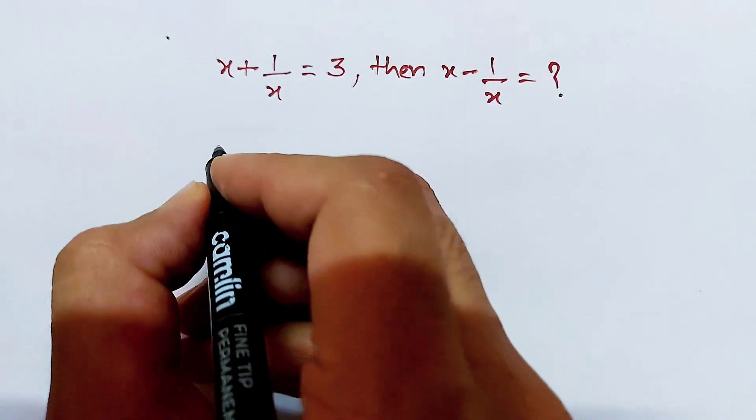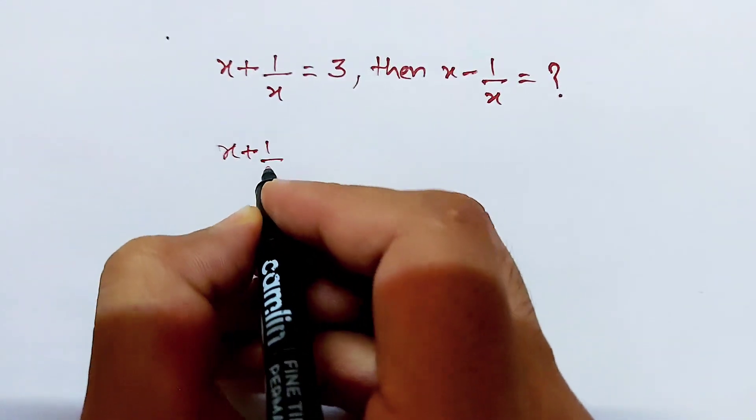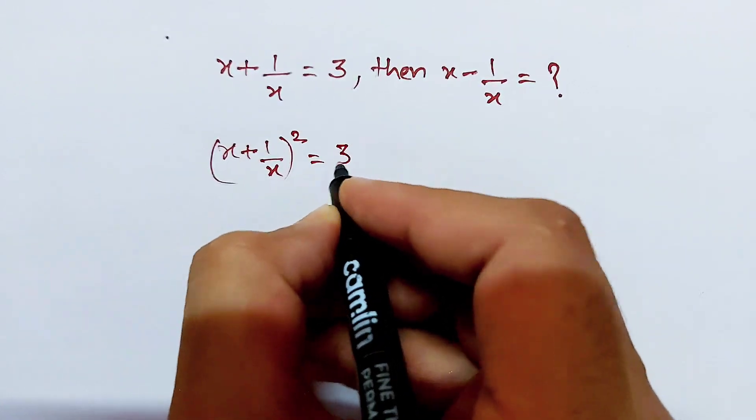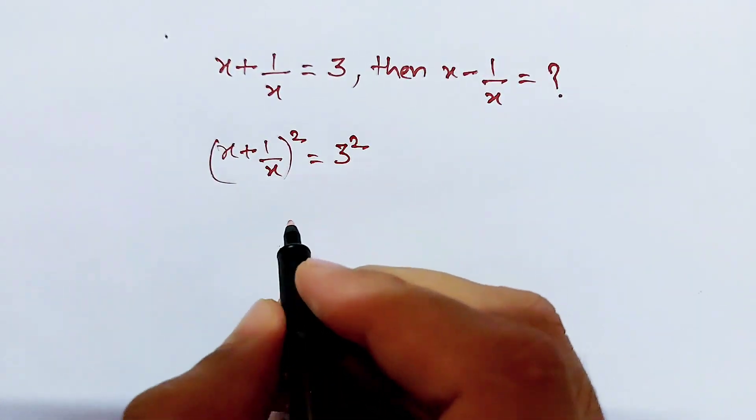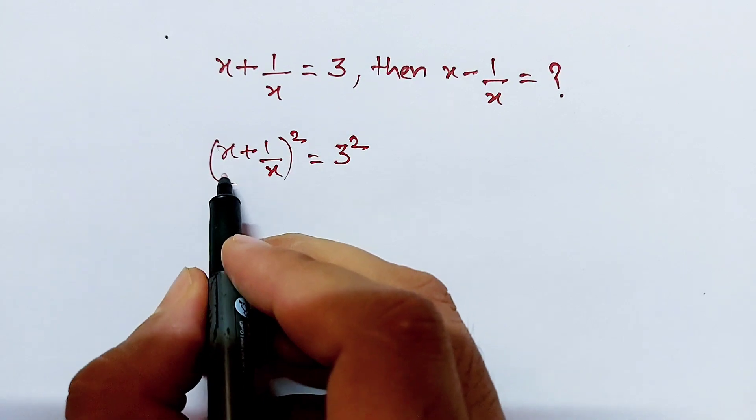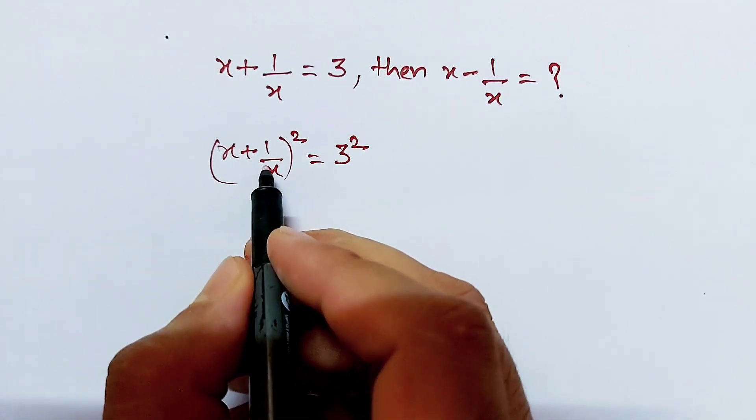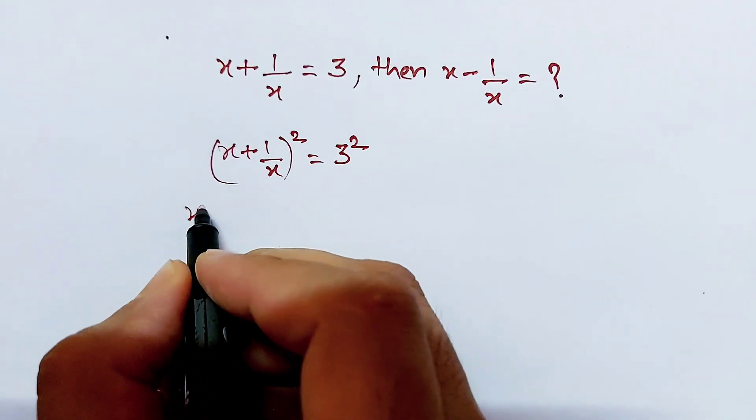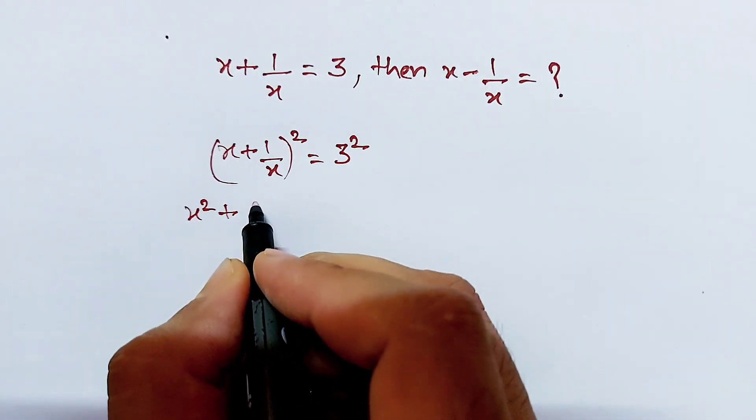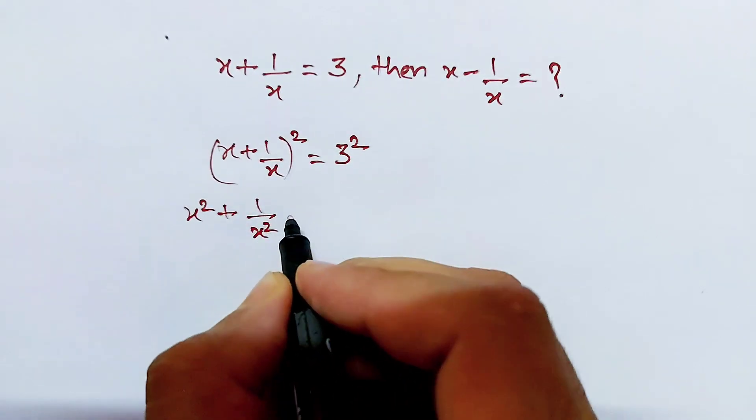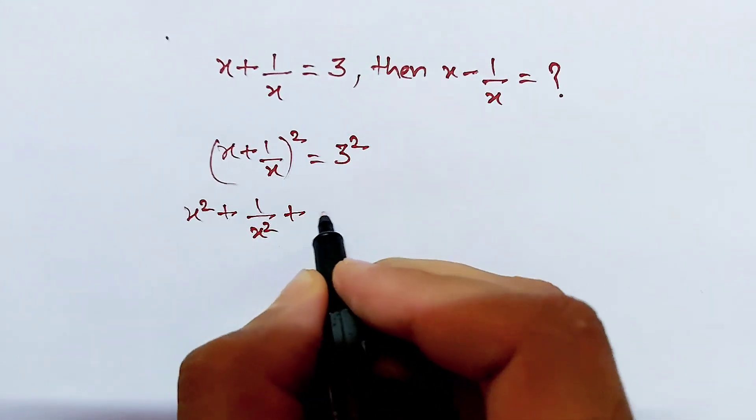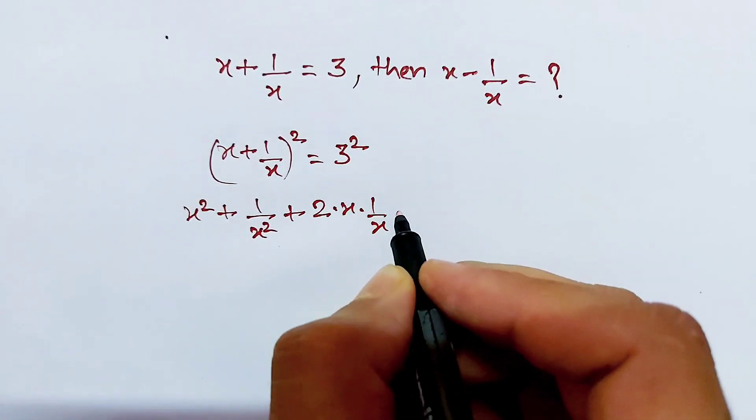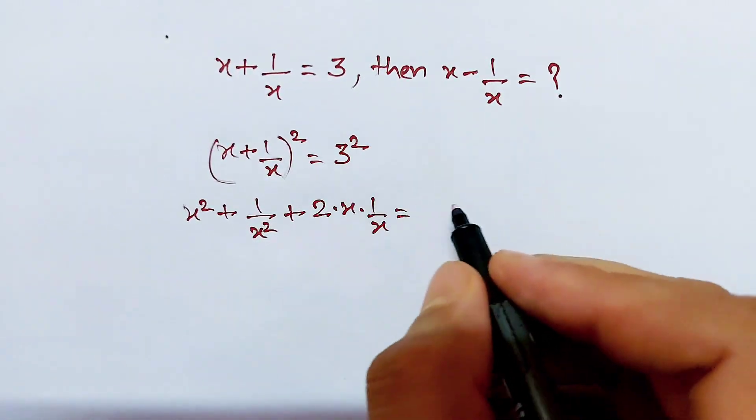Now you know the algebraic formula a plus b whole square, which equals x square plus 1 over x square plus 2 times x times 1 over x. And square of 3 is equal to 9.